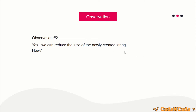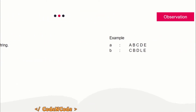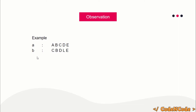Can we reduce the size of this newly created string? The answer is yes, using subsequences. Suppose these were two input strings. If you find out their LCS — the Longest Common Subsequence — the LCS of these two strings might be three. C matches with C, D matches with D, E matches with E. So the longest common subsequence of these two strings is three, and the theory is you can reduce them by that length.